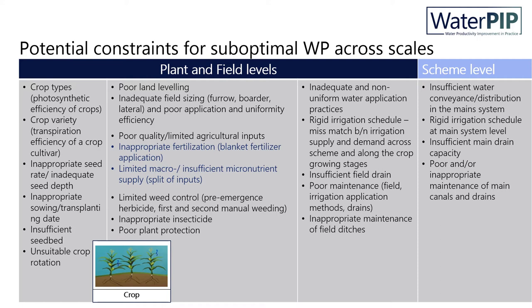At crop level, crop types affect the photosynthetic efficiency of a crop. Crop varieties — for example, the transpiration efficiency of the cultivar — can also be mentioned as a cause. In addition, poor crop management including inappropriate sowing or transplanting dates, inappropriate seed rate, and unsuitable crop rotation can be causes.